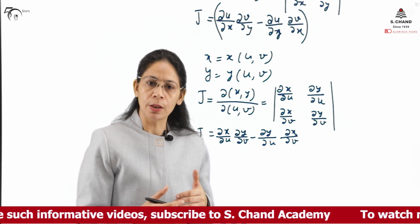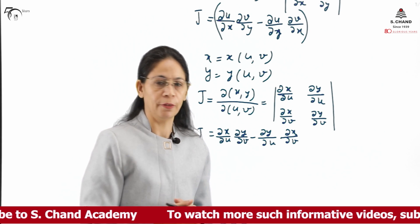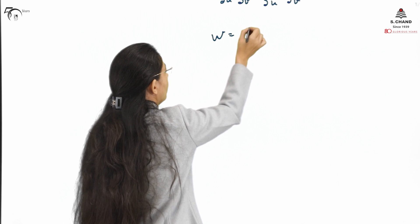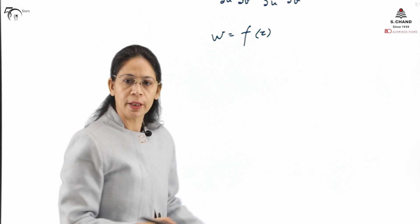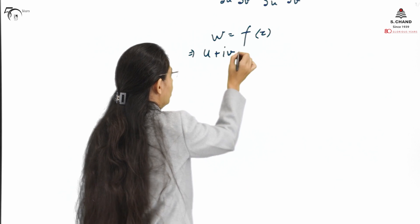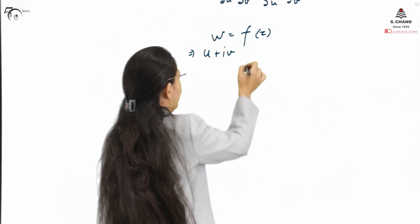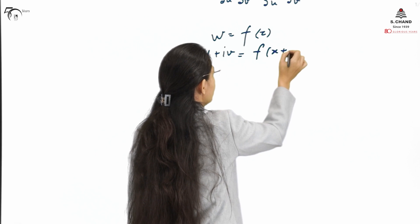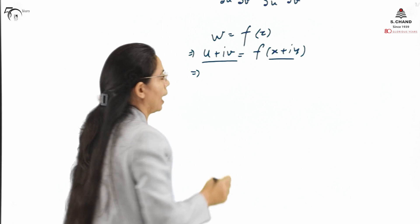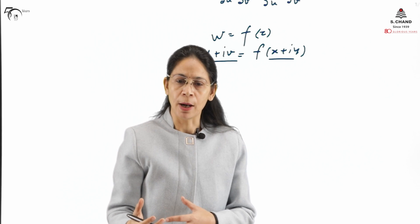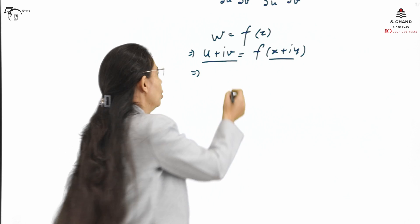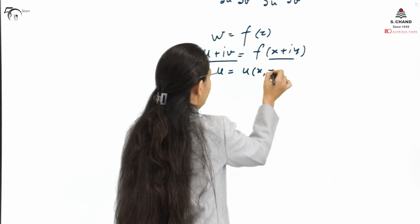Similarly, a similar transformation exists for complex variables and complex functions also. If we write down a complex function w = f(z), as discussed in previous videos, w can be represented as u + iv and z can be represented as x + iy. So u and v are the real and imaginary parts of the complex function, and they can be resolved and written in terms of x and y.